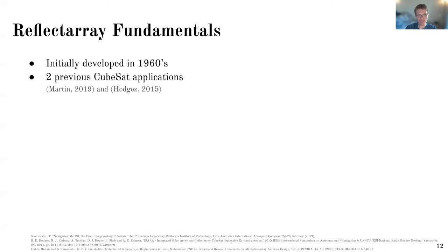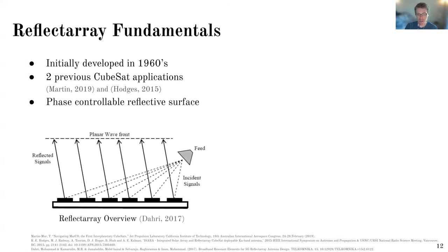So the reflect array is one type of antenna which has a lot of potential in that way. So the reflect array initially developed in the 1960s, but it really didn't see widespread application and it hasn't yet even to today. So there's been two previous applications on CubeSats. And my application that I worked on is slightly different. So I'll highlight that in a little bit.